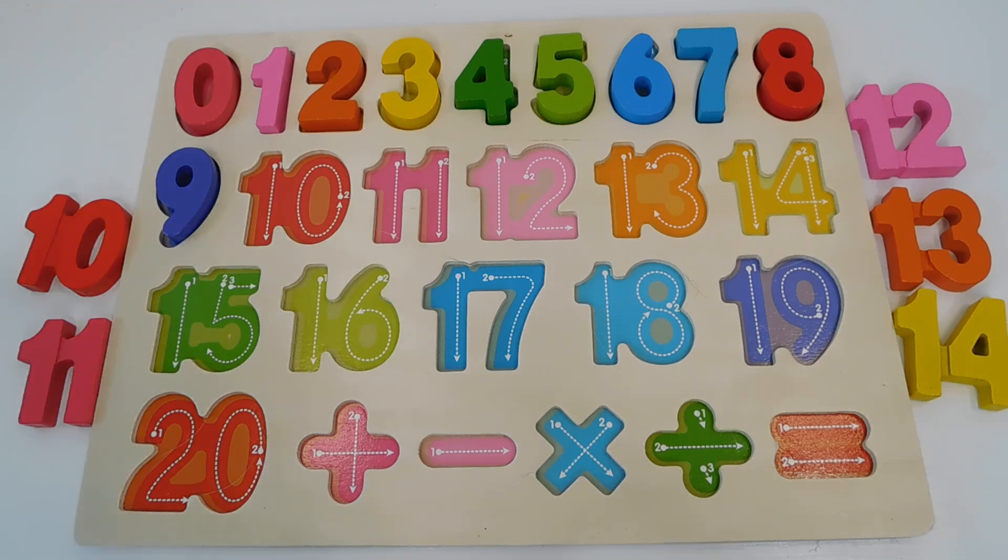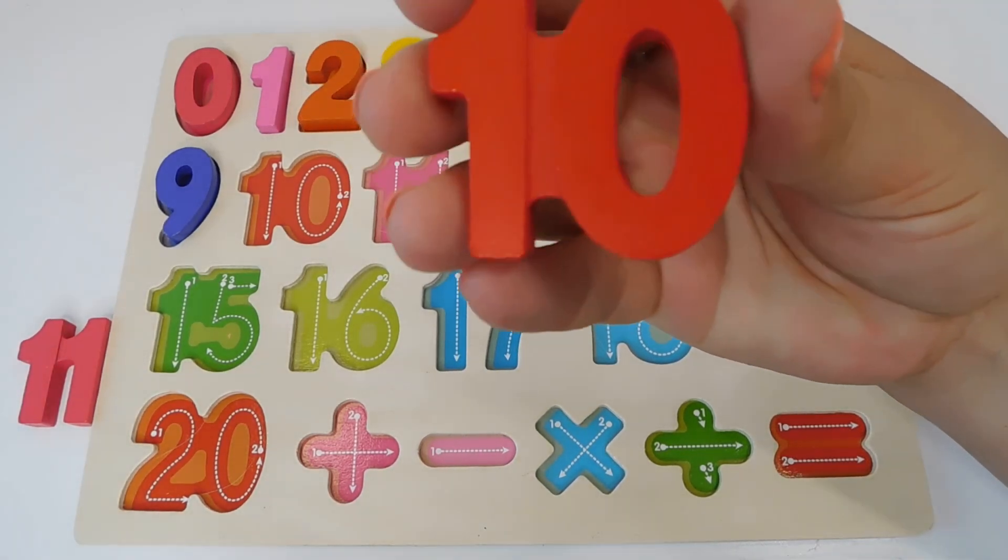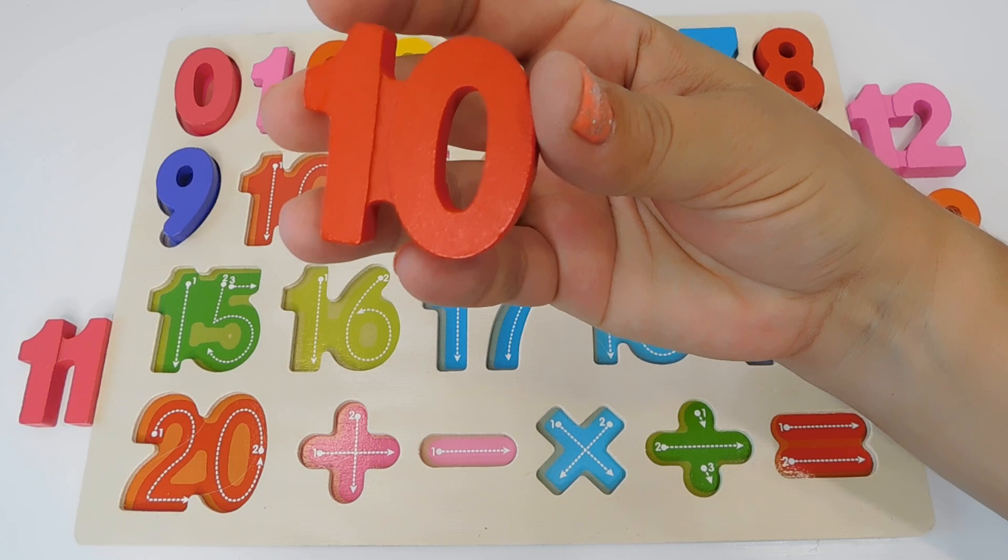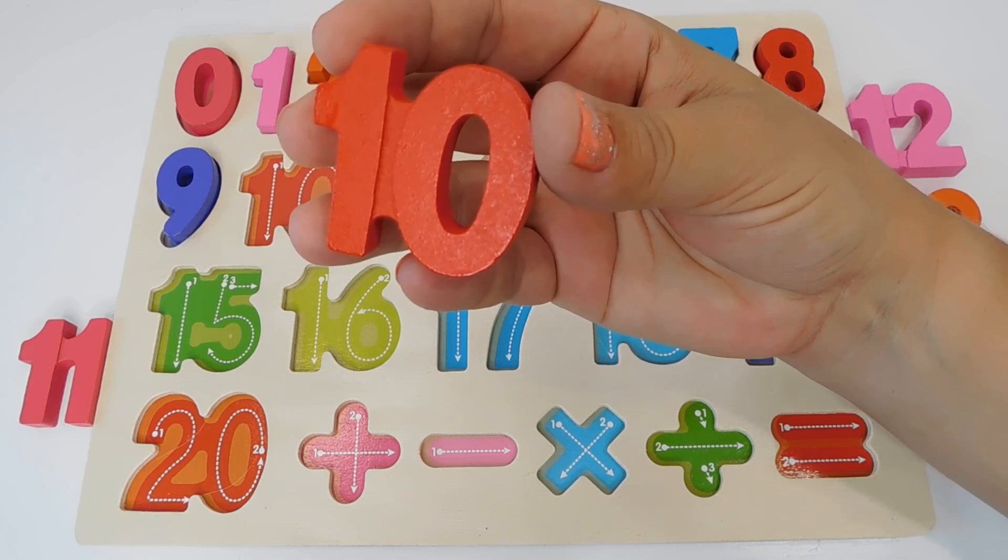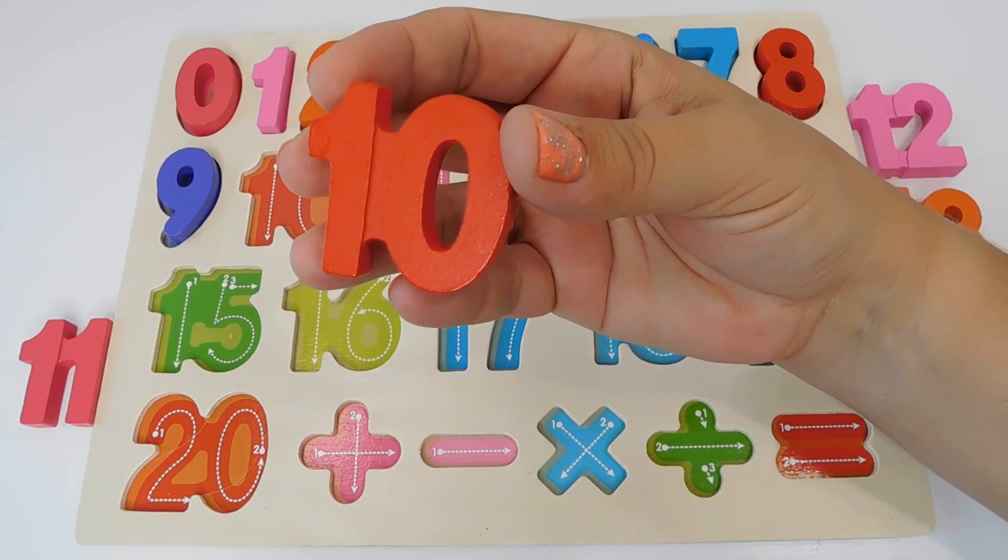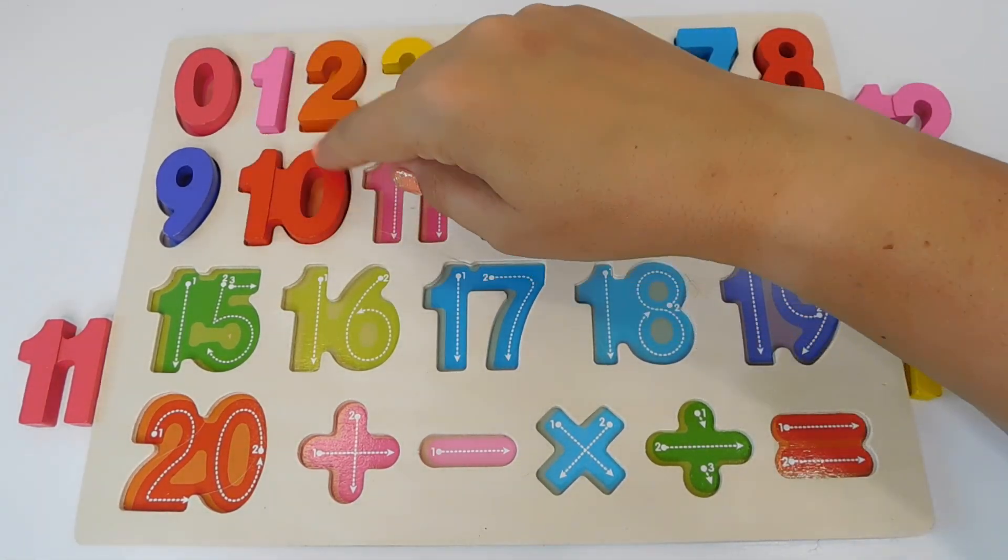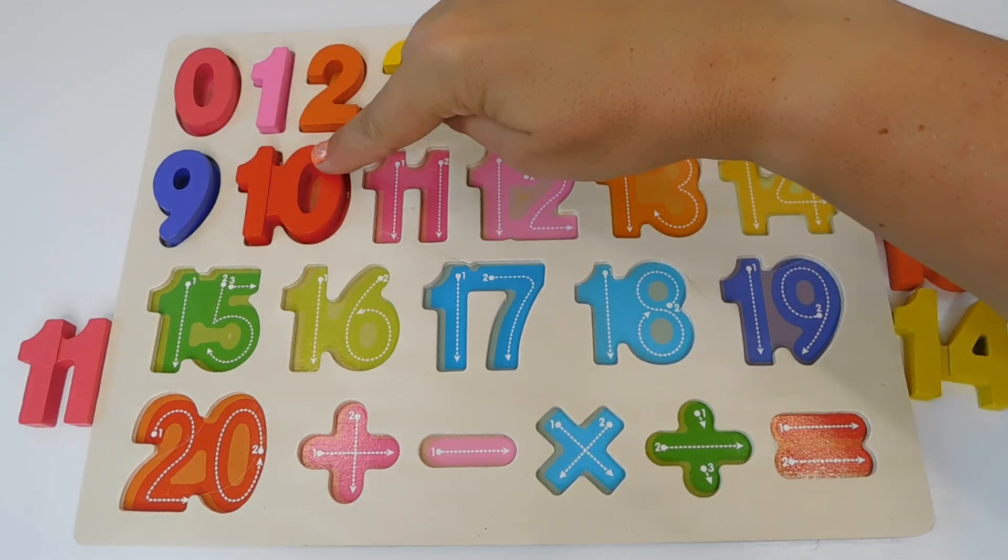Our next number has two digits. It is number 10. This is a red 10. 10. It has a 1 and a 0 together. Number 10 goes here. 9, 10.